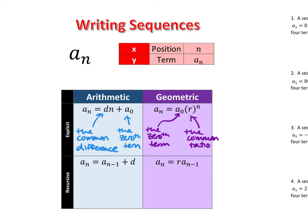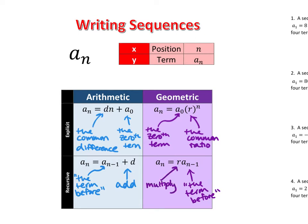We're also going to be using sequences equations when they're written in what's called a recursive pattern. A recursive pattern is really easy to use because all it does is say: to create a new term in the sequence, we're going to take the term before — that's what that funky notation means. A sub n minus 1 really means the term before, and we're going to add the common difference. For a geometric sequence written in a recursive pattern, all we're going to do is take the term before and multiply it by r. So the recursive patterns tell us to take the term before and add the common difference, or take the term before and multiply by the common ratio.